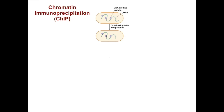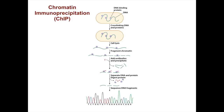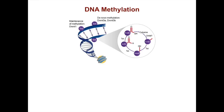Cells are lysed and the chromatin is fragmented. Then antibodies are added to the fragmented chromatin. These antibodies are specific to certain modifications of chromatin or other DNA binding proteins, and the antibody is used to precipitate the DNA. DNA and the protein are separated by digesting all the protein, and then the DNA fragments can be analyzed with Illumina sequencing, for example. This allows you to know what type of DNA binding protein, or what type of modified histone, is associated with what sequences of DNA in the genome.